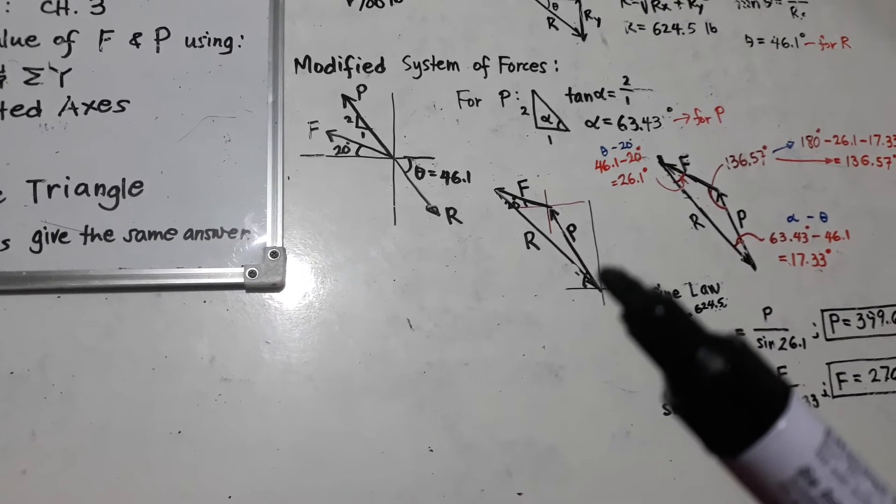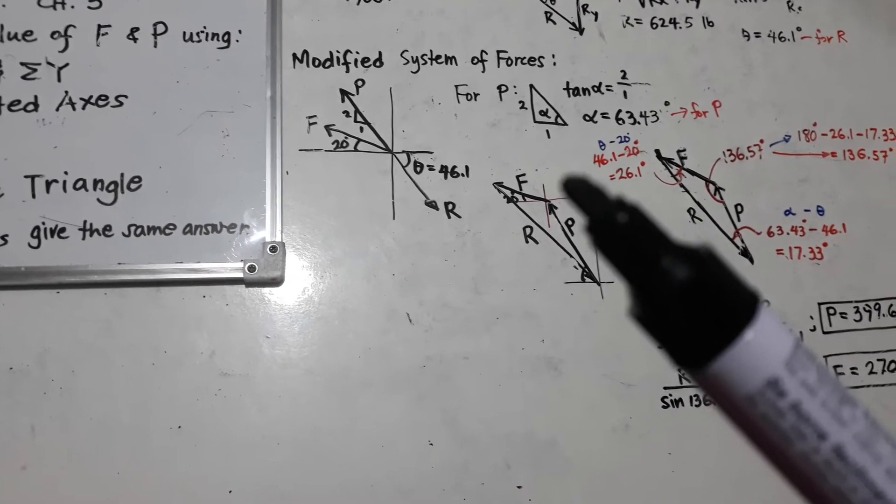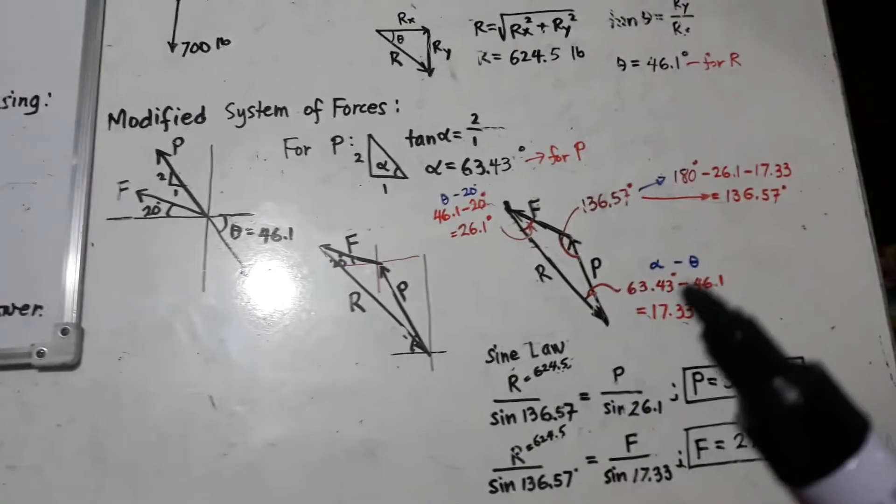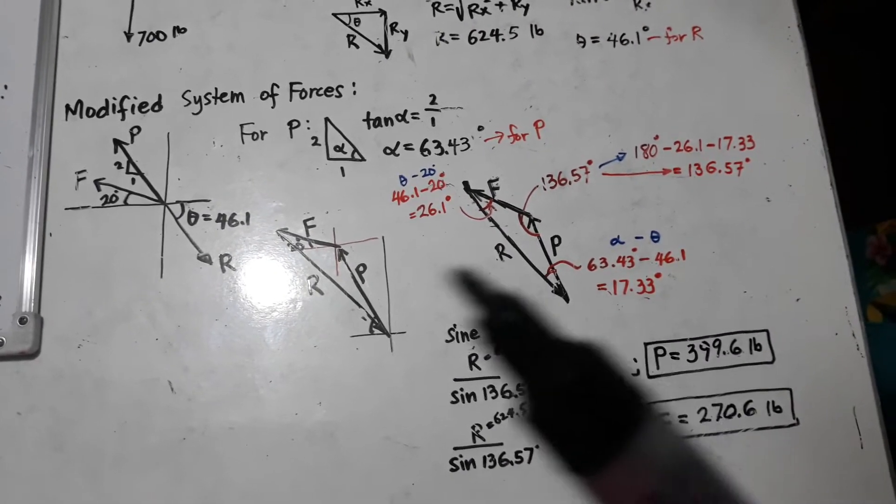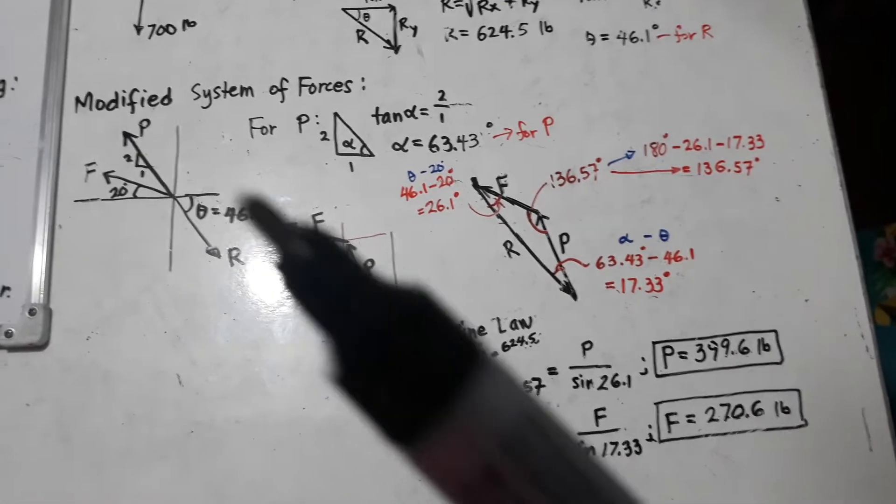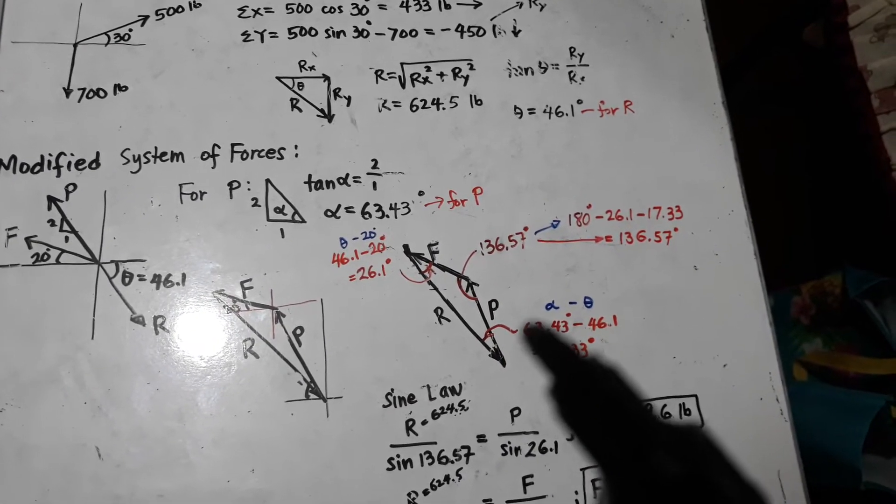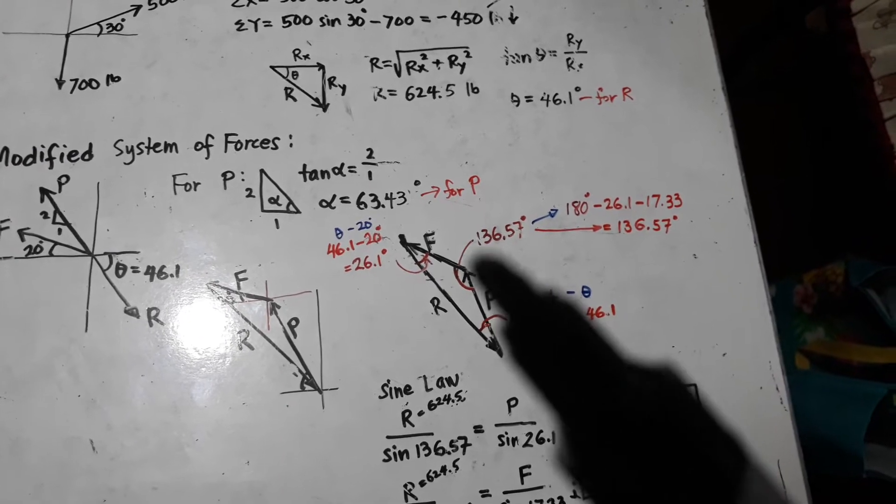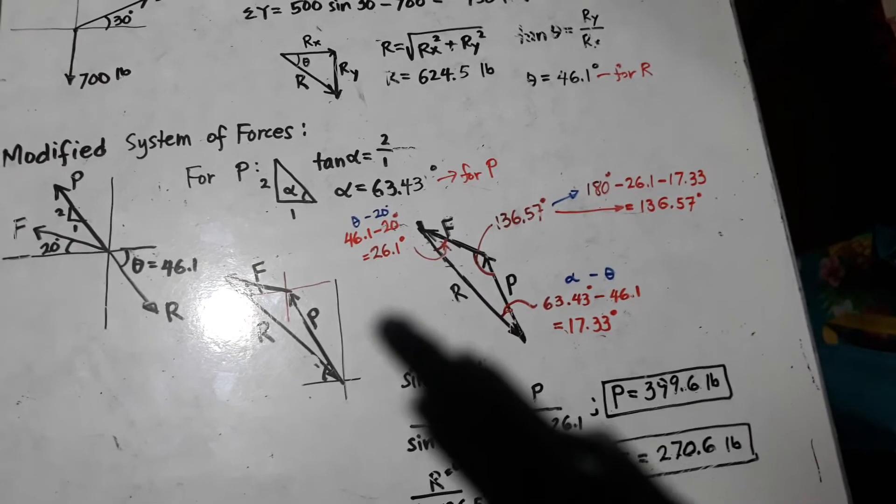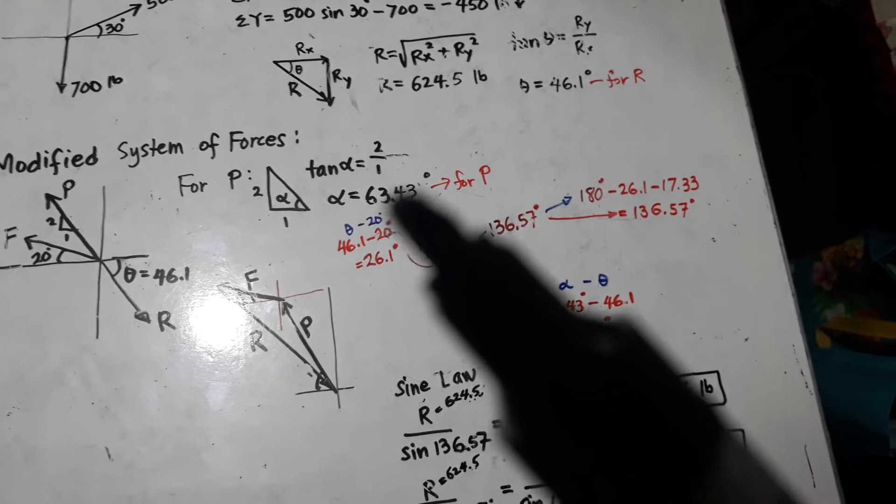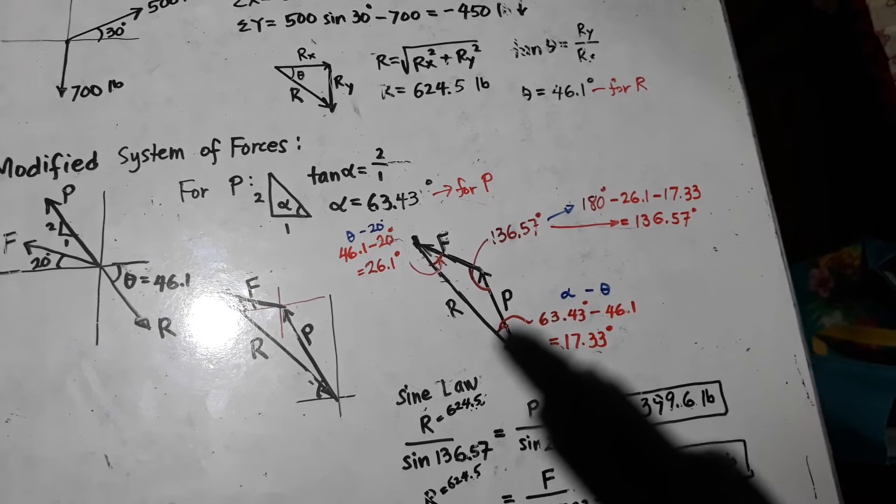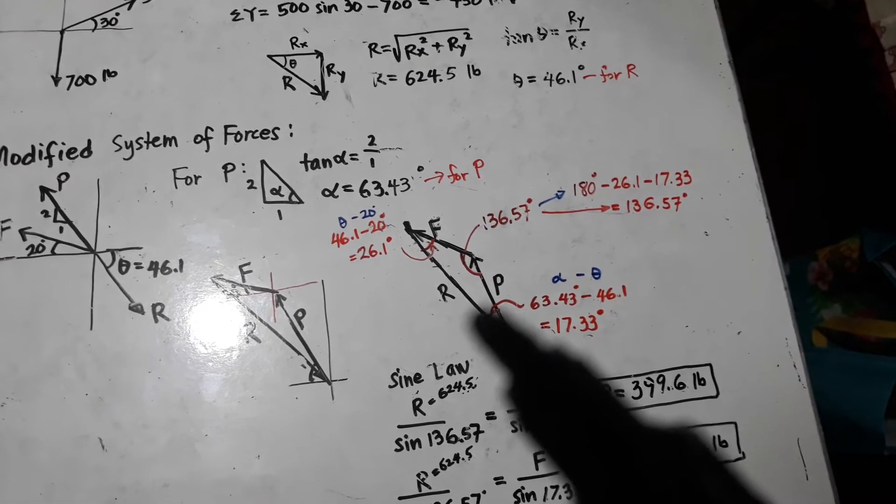The challenge is to find the angle here or practically all the angles in this triangle. So, if I am going to start with the angle here, that is between R and P. R is here and P is there. So, it means that I need to know the angle of R, which is 46.1, and the angle of P, which is 63.43. So, if I am going to take the difference, the angle here would be 17.33.